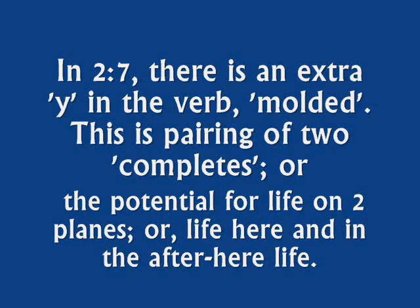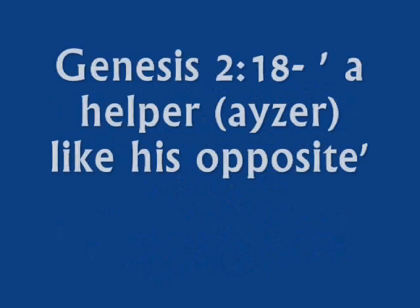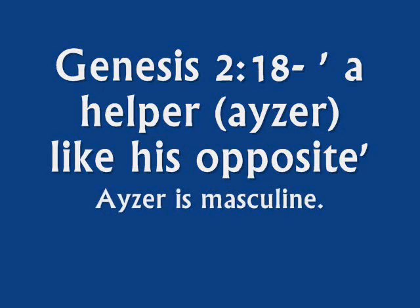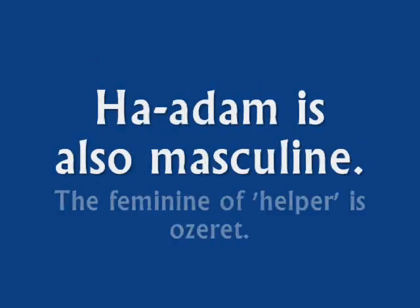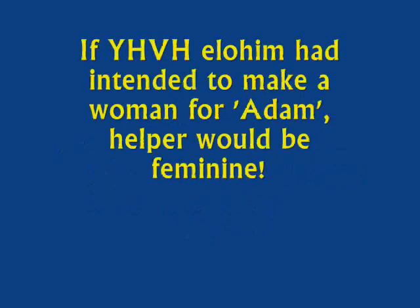Then YHVH Elohim says, it's not good for the human being apart from himself. I will make a helper opposing him. Here's a little point: Hebrew words have to be masculine or feminine, and the word helper here is masculine. There is a feminine form of the same word meaning helper, but it is not used. So if you're a heterosexist and say that God made men to be with women and that's the natural thing, you have a big problem with this verse. Why didn't it say the feminine form of helper if that was the intent?